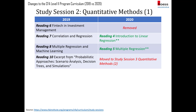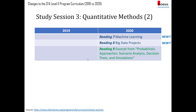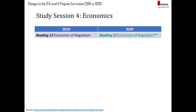There are two new readings for quants. Reading seven is on machine learning — taken out from multiple regression and expanded into its own reading, covering supervised learning, unsupervised learning, overfitting, neural networks, deep learning nets, and reinforcement learning. Reading eight covers big data projects, including steps in a data analysis project, data wrangling, data exploration, model training, and how to evaluate the fit.